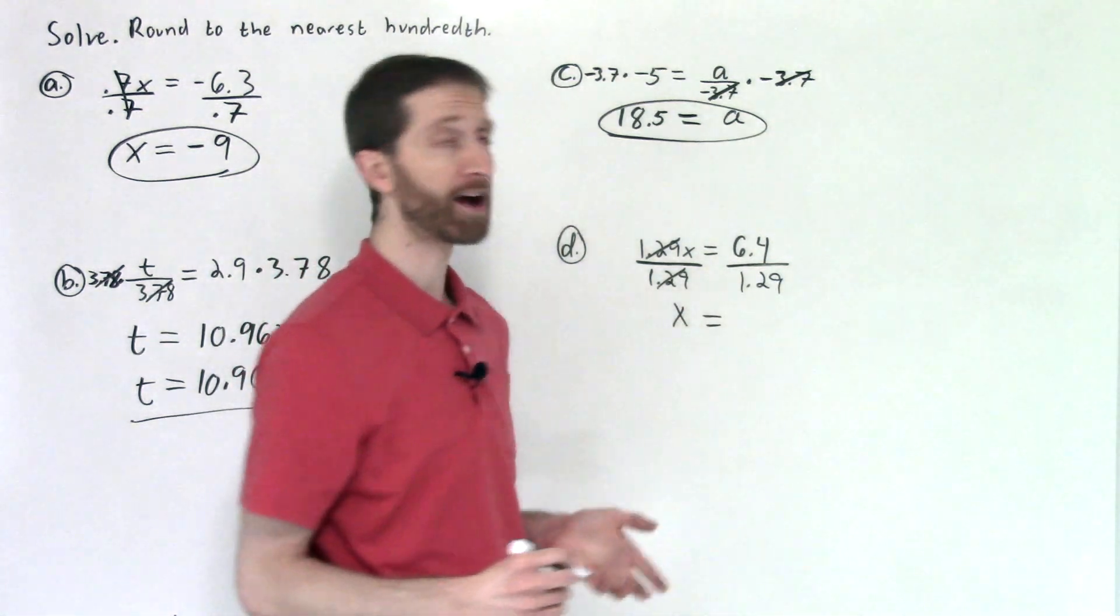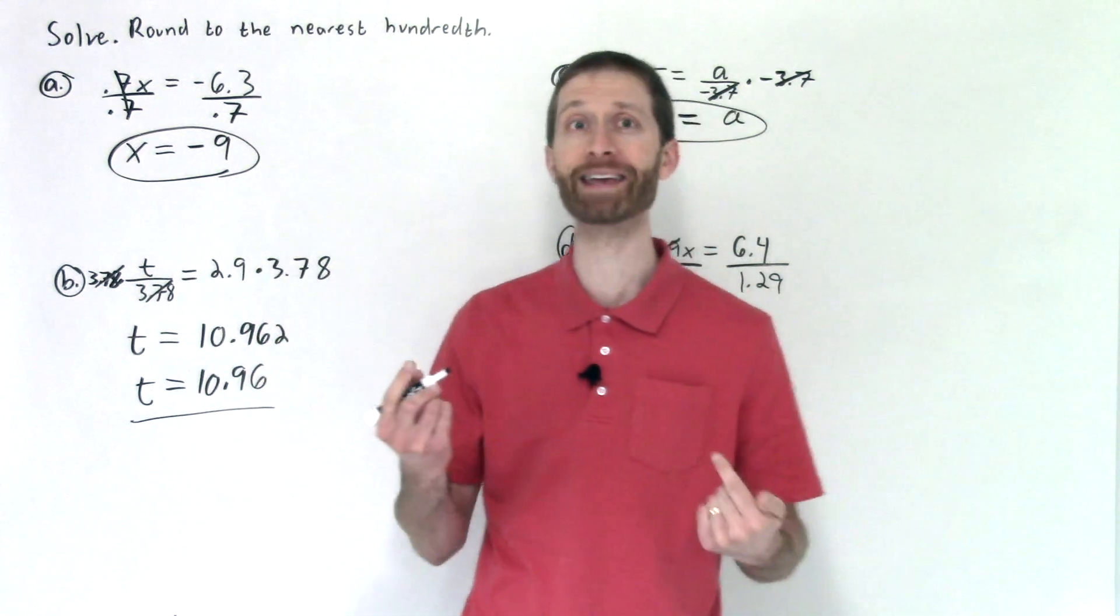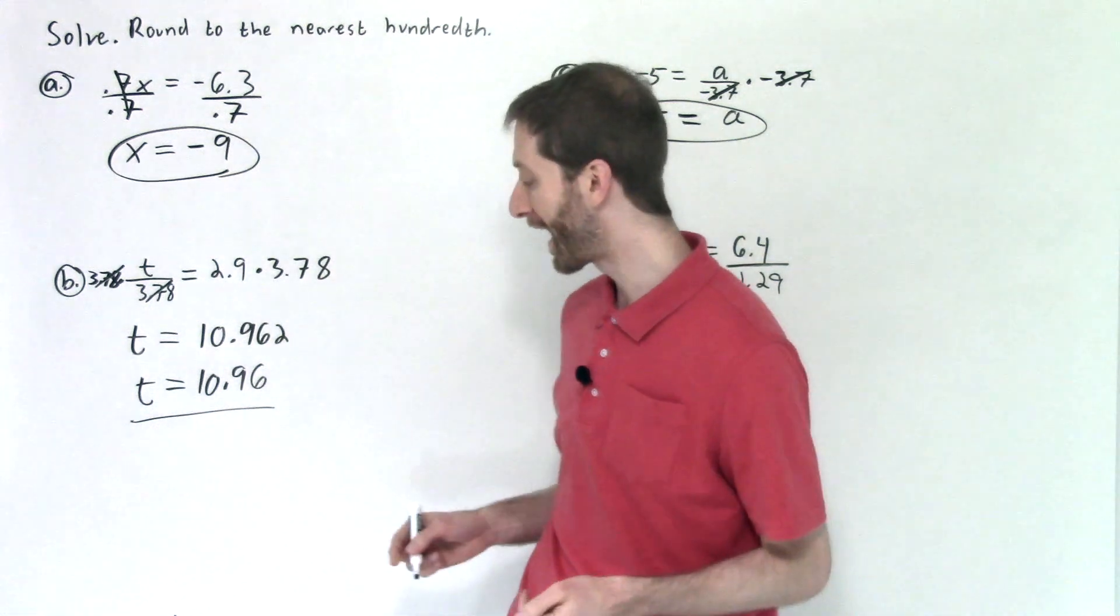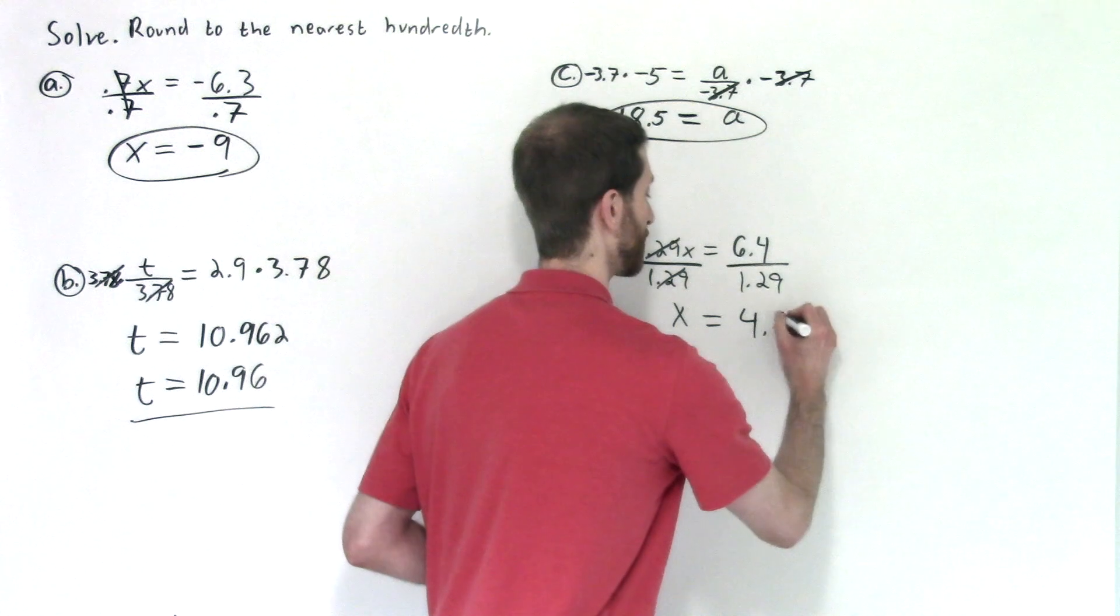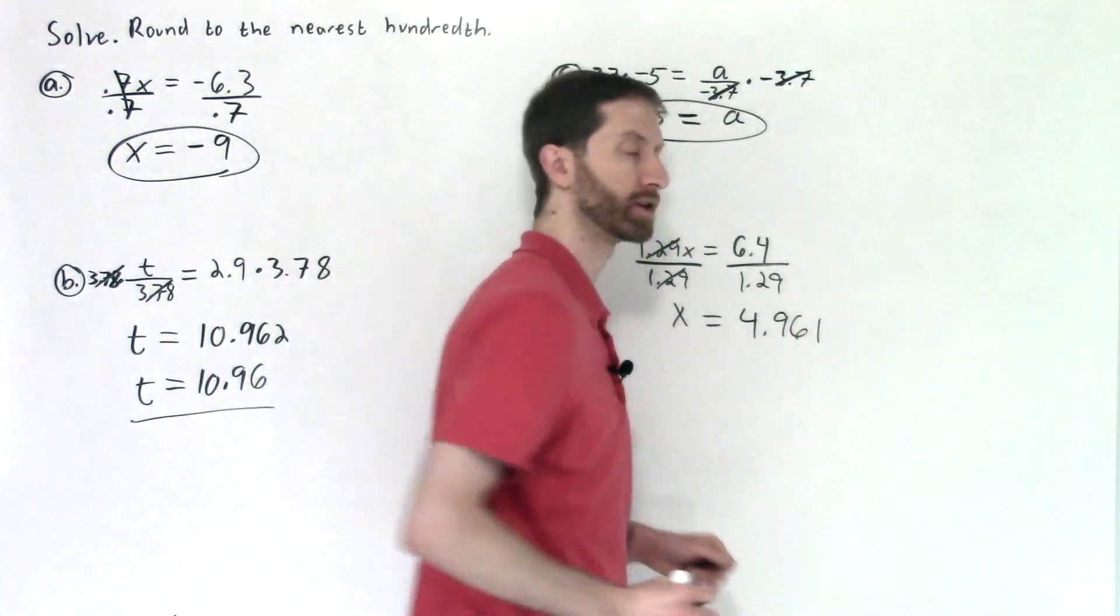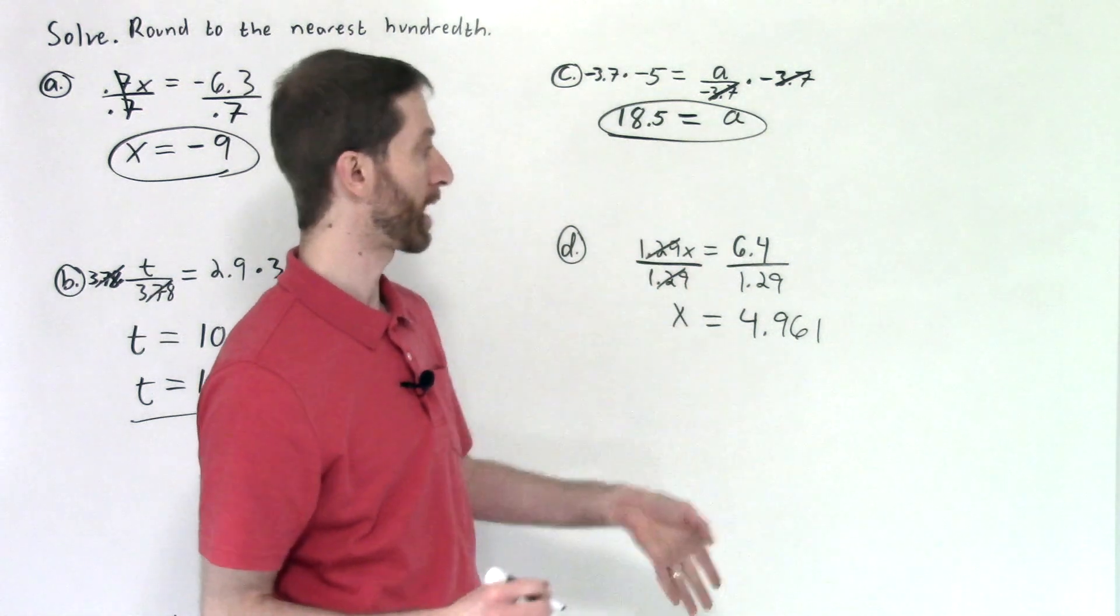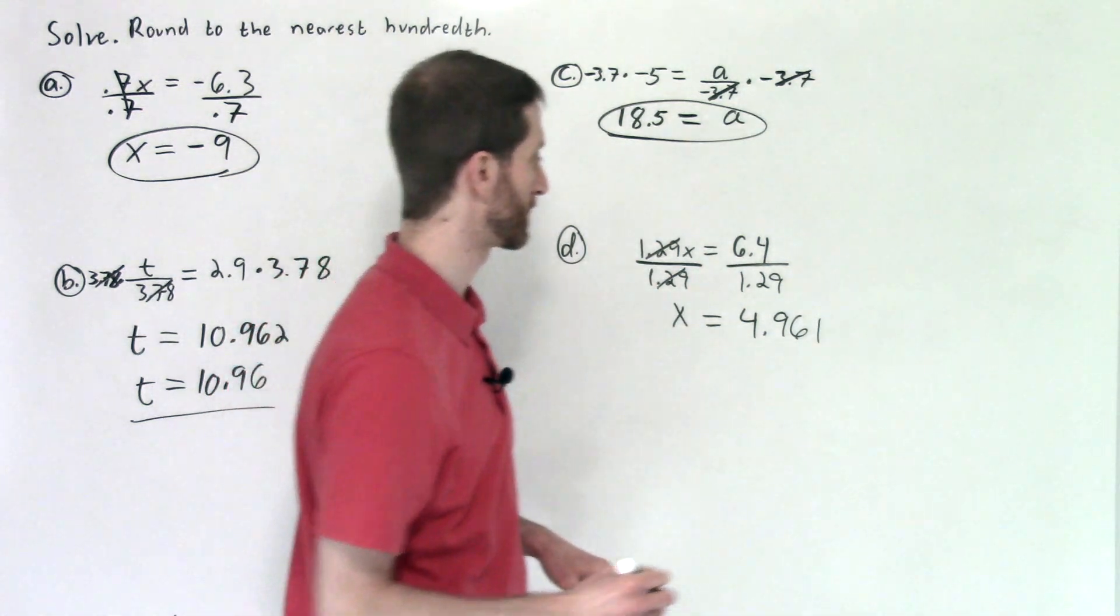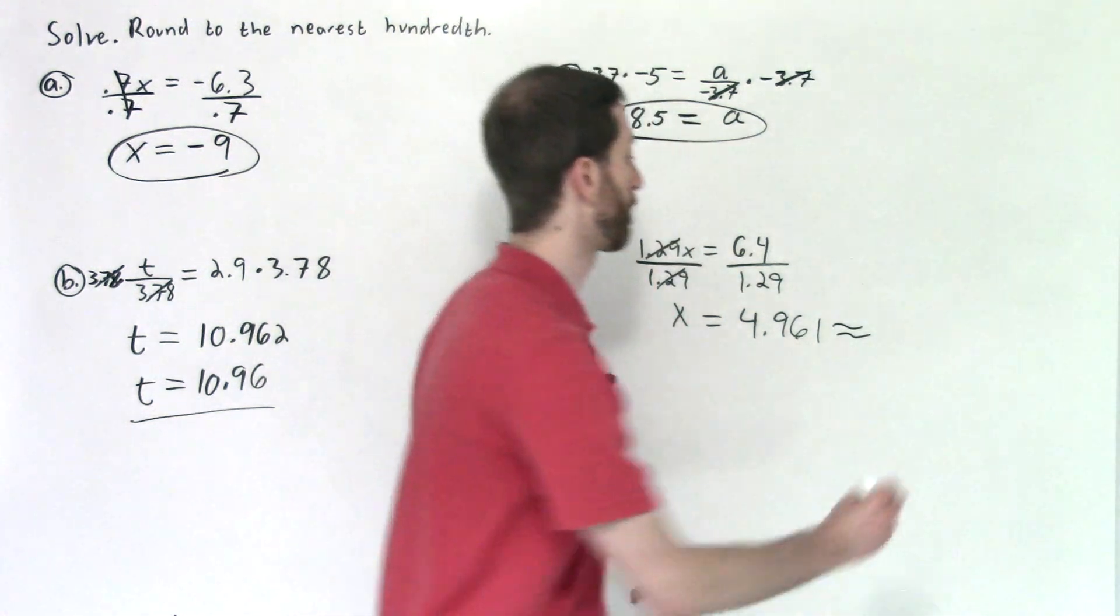Now definitely use a calculator. 6.4 divided by 1.29 is not so sweet. I'm going to take a quick look into my calculation and what I did for that. And I got a much longer decimal than that, as you will too in your calculator. But I rounded to the nearest, well, I just chopped it off to the thousandth place. And then of course we're rounding that to the nearest hundredth. So that would just be 4.96.